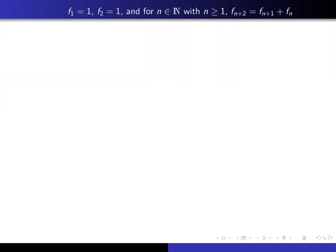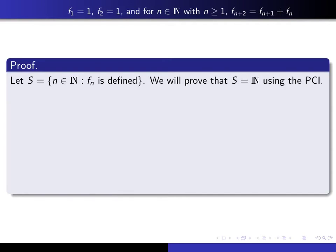So here I'm just reminding you what is the inductive definition of the Fibonacci numbers. And here's the beginning of the proof. We begin by telling the reader what is the set S. S is the set of all natural numbers such that f sub n is defined, and we're going to use the principle of complete induction to prove that S is equal to all of N.